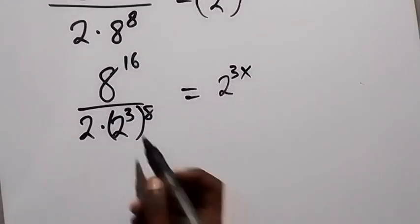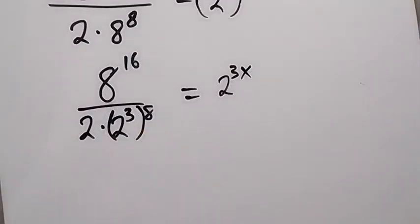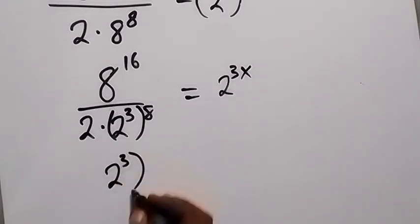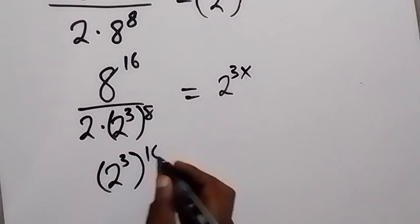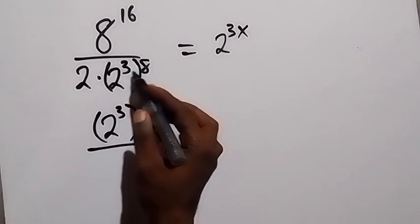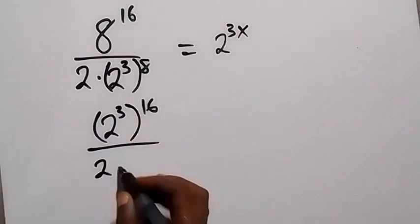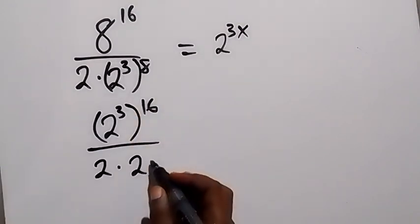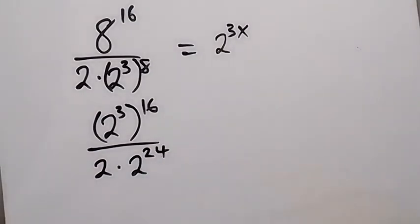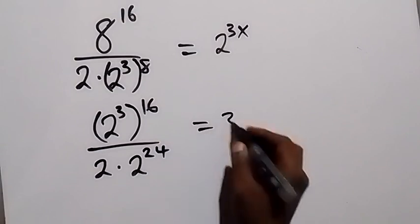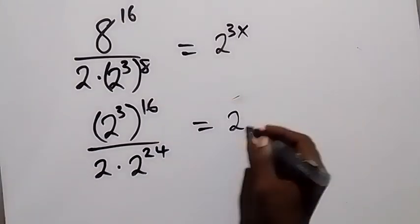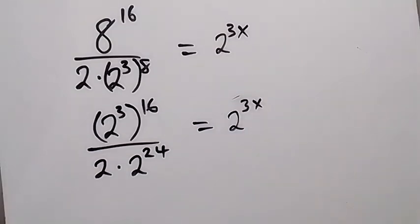We can also change the numerator to base 2: that will be 2 raised to power 3 times 16, giving us 2 times 2 raised to power 24. This equals 2 raised to power 3x.